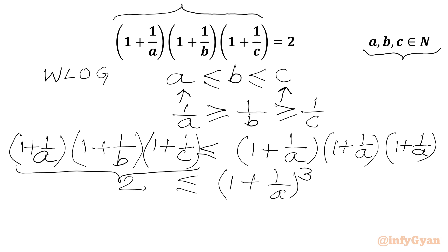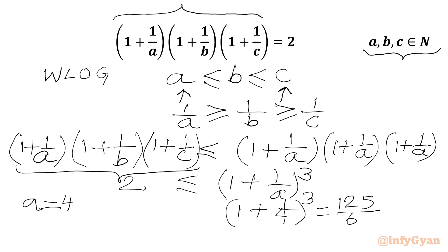We restrict variable A by testing A = 4. If A = 4, then RHS = (1 + 1/4)³ = (5/4)³ = 125/64. Since 64 × 2 = 128 and 125 < 128, this value is less than 2. So A = 4 is not possible.